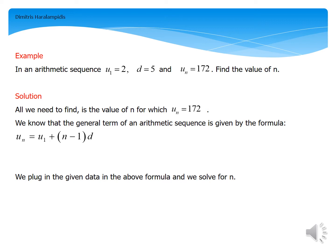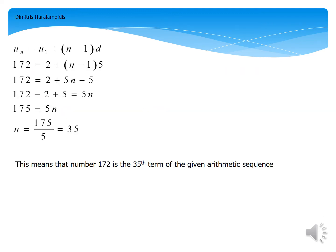So, we will just plug in the given data in this above formula and we will solve for n. By doing that, we get that 172 equals 2 plus (n-1) times 5, or else 172 equals 2 plus 5n minus 5.